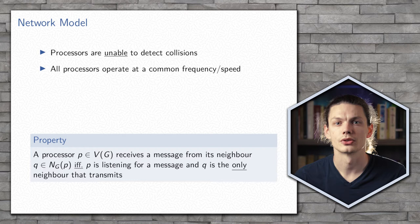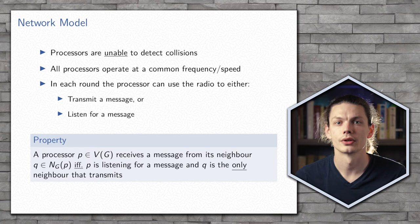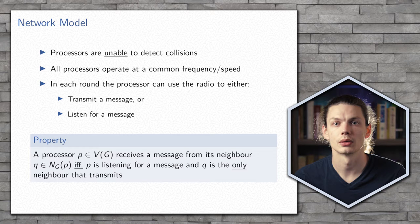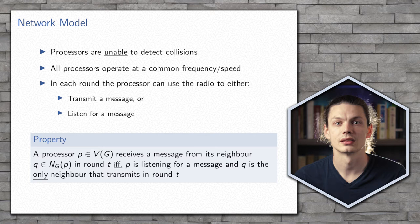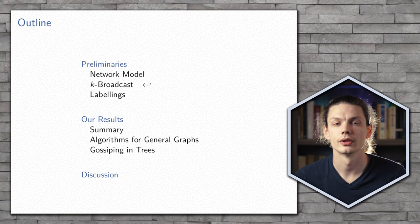Finally, we assume that all the processors operate at the same speed, so we can discuss time as occurring in rounds. In every round, each processor can either be listening or transmitting. We can incorporate this into our property by saying that a processor will receive a message in the r-th round if and only if it is listening in the r-th round and exactly one of its neighbors is transmitting in the r-th round.